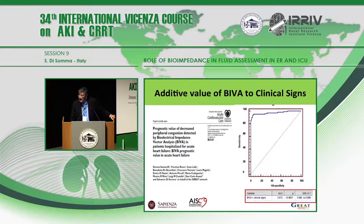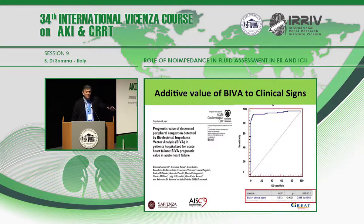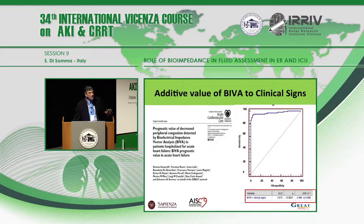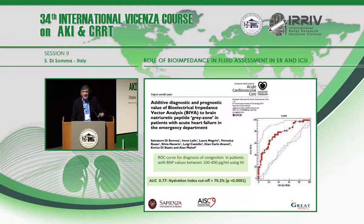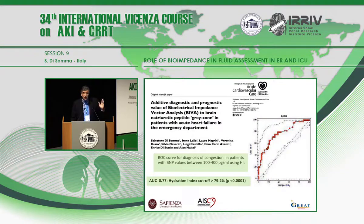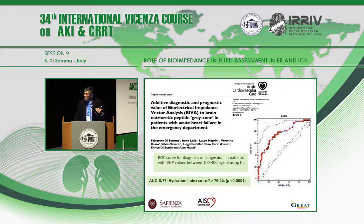This was confirmed in our study: the area under the ROC curve is very high when you combine BIVA with clinical signs. Starting from a clinical evaluation where you suspect congestion due to acute heart failure, adding BIVA makes your comprehensive assessment much more precise. In the BNP gray zone — between 140 and 400 — if you add BIVA and the vector is short, you can immediately confirm that the patient is congestive. So BIVA can help you better interpret natriuretic peptide values.